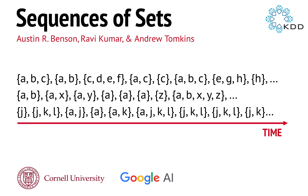This paper is about modeling data that looks like sequences of sets. Here's a little cartoon example on the slide. We have three sequences, and each sequence contains a bunch of sets that appear in some order — we're usually going to think about these sets as appearing in time order.